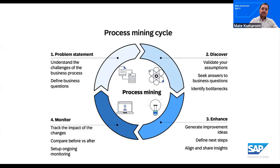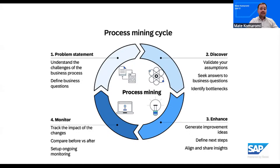Every process mining journey starts with a problem statement — not just asking what happened, but why it happened, and how we can make it better. From that point, we move into the discover phase, bringing together data from across systems to see the process as it really runs, not just as it's designed on paper. Once we have that transparency, we enhance — identifying where delays, rework, or bottlenecks appear, and exploring how to remove them. Then we monitor, tracking improvements in real time, measuring outcomes, and ensuring that changes truly deliver impact. And when that cycle closes, it doesn't end — it starts again. Each round brings new questions, deeper insights, and stronger results. That's what makes process mining so powerful. It's not a one-time activity, but a continuous journey of discovery, enhancement, and measurable transformation.